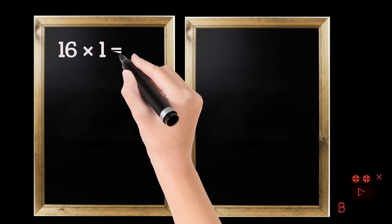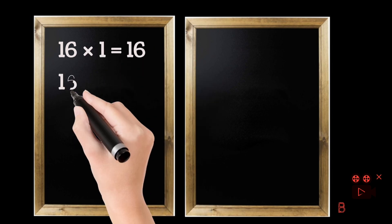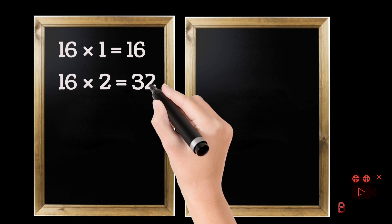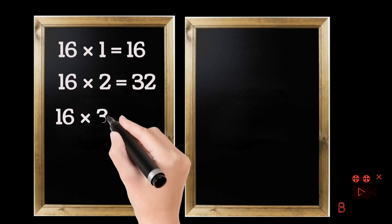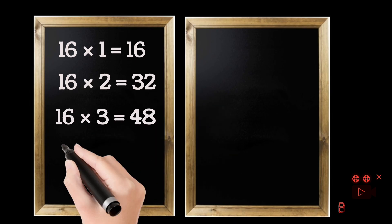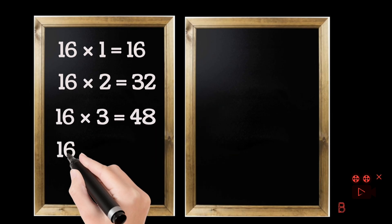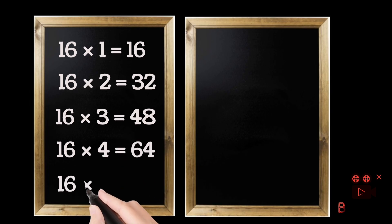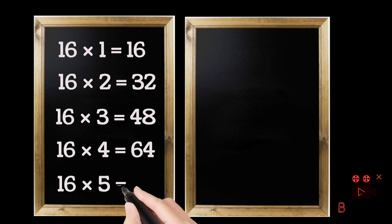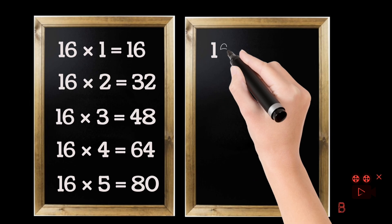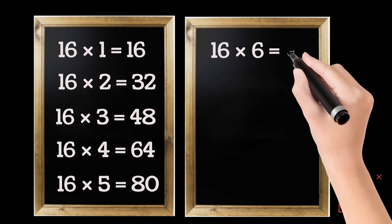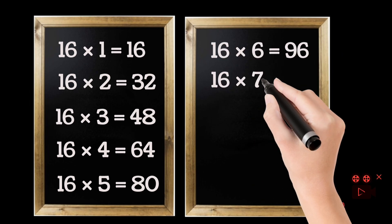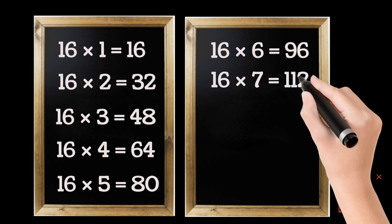16 ones are 16. 16 twos are 32. 16 threes are 48. 16 fours are 64. 16 fives are 80. 16 sixes are 96. 16 sevens are 12.